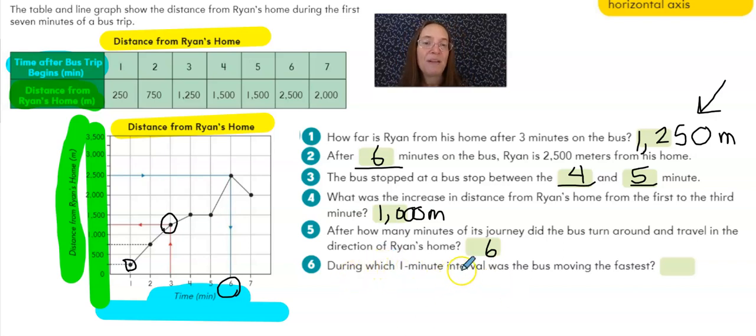During which one minute interval was the bus moving the fastest? Well, if it's staying completely slow between four and five, which one does it go farthest away from his house in that time? You can see between three and four, it just goes a little bit. I noticed that between one and two, it goes more than that. But look at the difference between minute five and six. Wow! Maybe the speed limit changed. Maybe the traffic got better. I'm not sure. But the one minute interval where I see the bus going the fastest is from five to six minutes. And that's how you would show that.